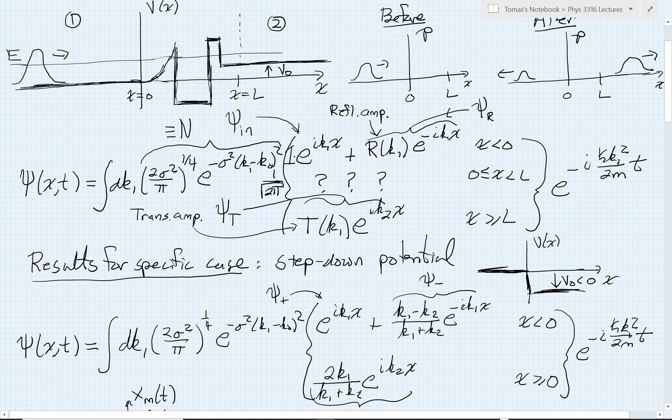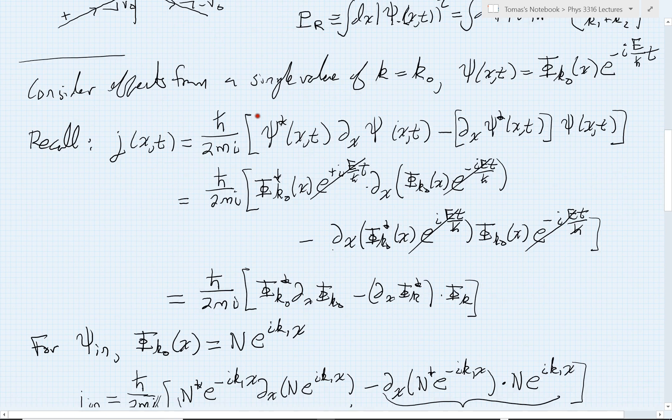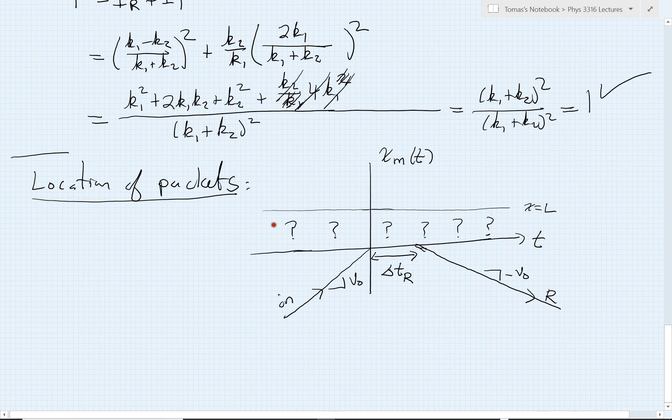And this second term with this transmitted packet then will emerge on the other side. And it also in general may experience some sort of a time delay from when the incoming packet hits. I don't know how much time delay there might be, but it might start over here. And then once it reaches the transmitted region, it's going to travel with the expected classical velocity, the kind of thing we've seen before. You can work it through and do the stationary phase if you like, but it'll have some other velocity. It might be larger or smaller depending upon the value of V0.